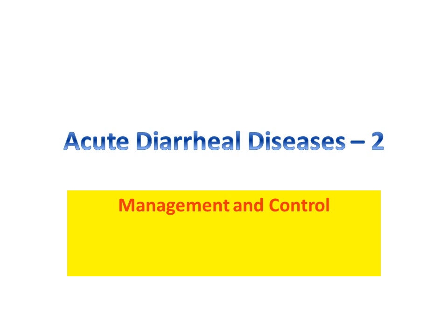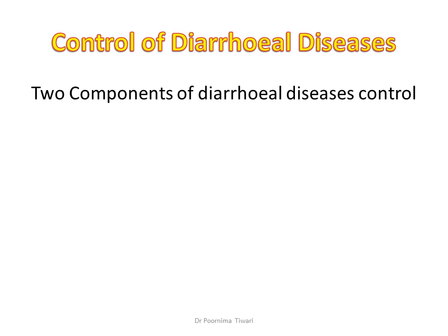This is part 2 of the lecture on acute diarrheal diseases, in which we shall discuss the control of acute diarrheal diseases. Control means bringing down the incidence to such a level that it is no more a burden on the country — no more a public health problem. Controlling diarrheal diseases has two components: short-term and long-term strategies.